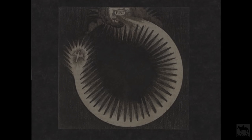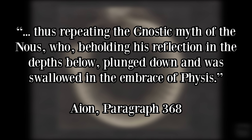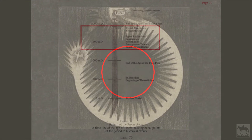The worship of matter in the latter half of the anti-Christian millennium reflects the Gnostic myth of the Nous, who, beholding his reflection in the depths below, plunged down and was swallowed in the embrace of Pisces. Pisces is another name for the void which birthed the natural world. In other words, the descent of Nous into Pisces is much like the descent of the human mind from the realm of the spiritual into the realm of the natural.